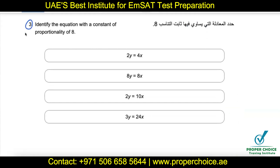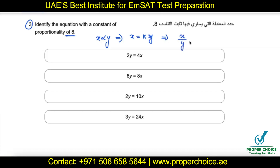Question number three is about proportionality. There are two types: direct proportional, where data varies directly, and inverse proportional, where data varies inversely. The question asks us to identify the equation with a constant of proportionality of 8. When data are directly proportional — say x is directly proportional to y — mathematically this is written as x equals some constant times y, or equivalently x divided by y equals a constant.